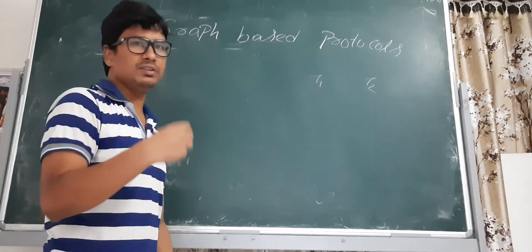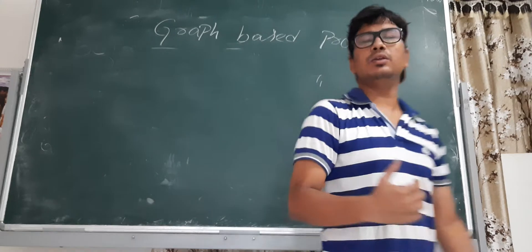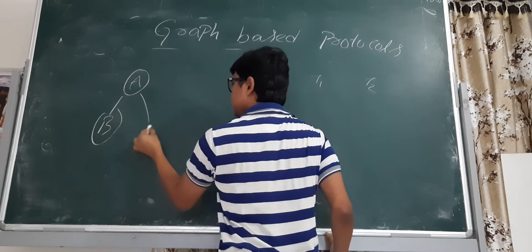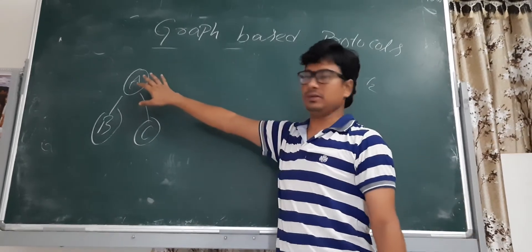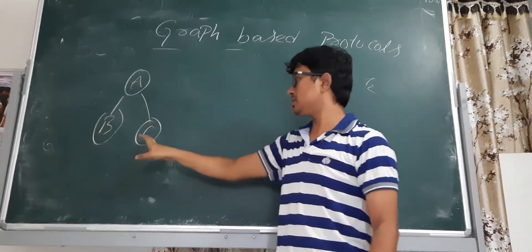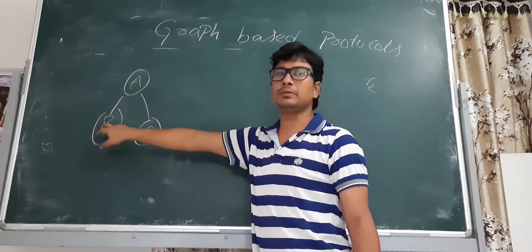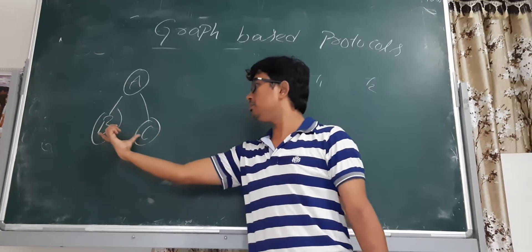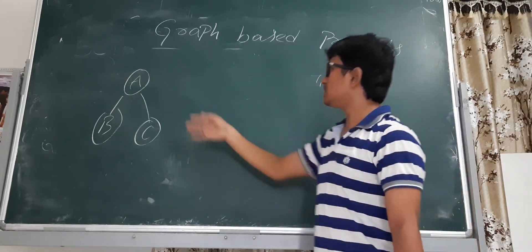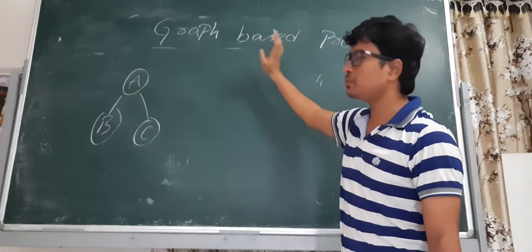A graph is nothing but a collection of nodes and edges. In this context, the nodes are the data items. For example, in this graph, node A is one data item, B is another data item, C is another data item. The edges represent that after data item A, you will come to data item B or data item C — so B and C depend on data item A.